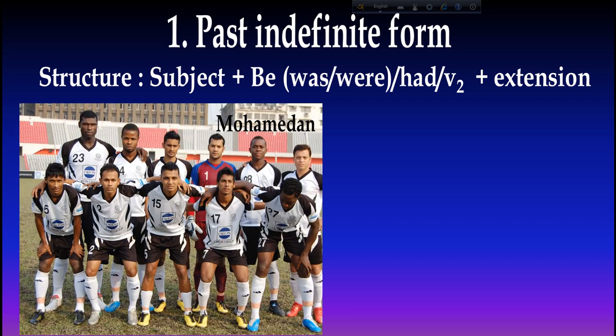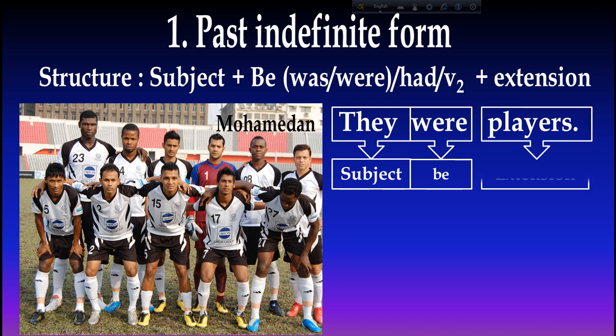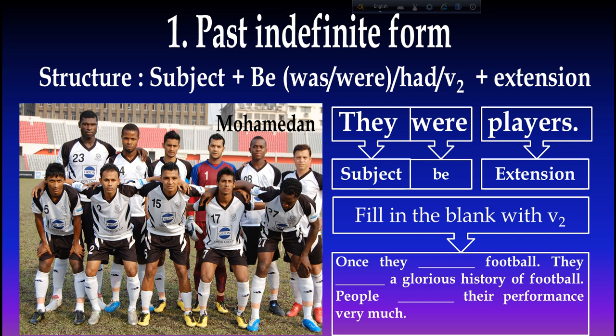Example: 'They were players.' Here 'they' is the subject, 'were' is the be-verb, and 'players' is the extension. Now fill in the blank with verb two: 'Once they were football players — they played football.' There was a glorious history of football and people observed their performance very much.